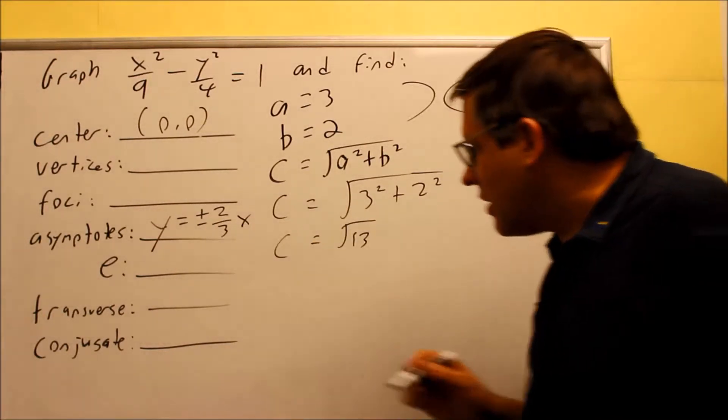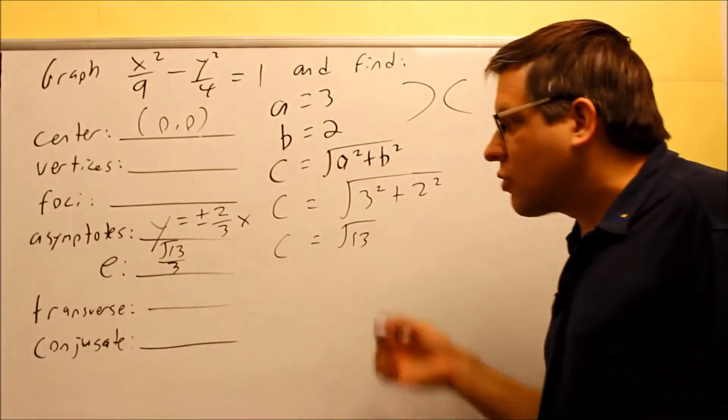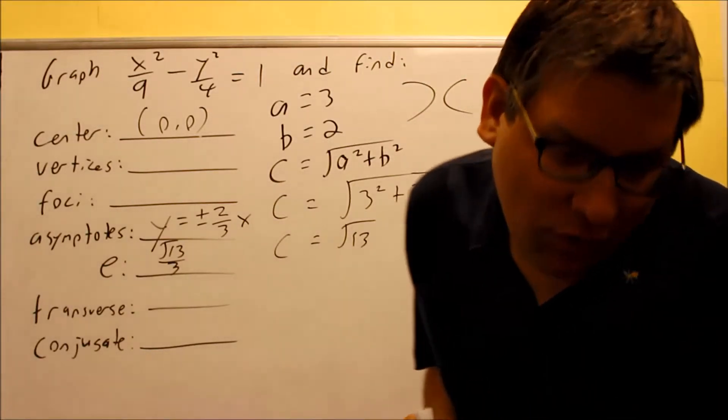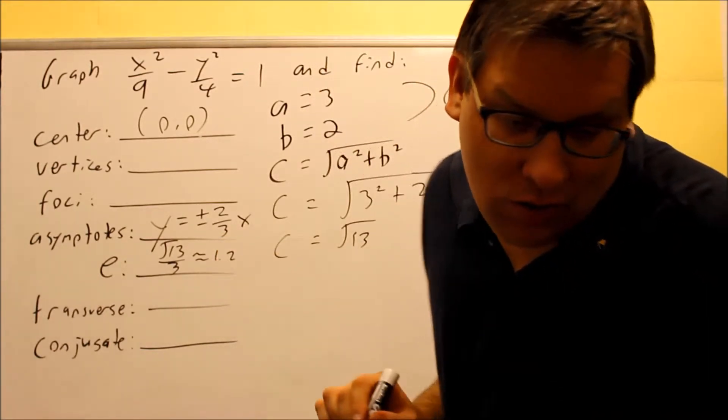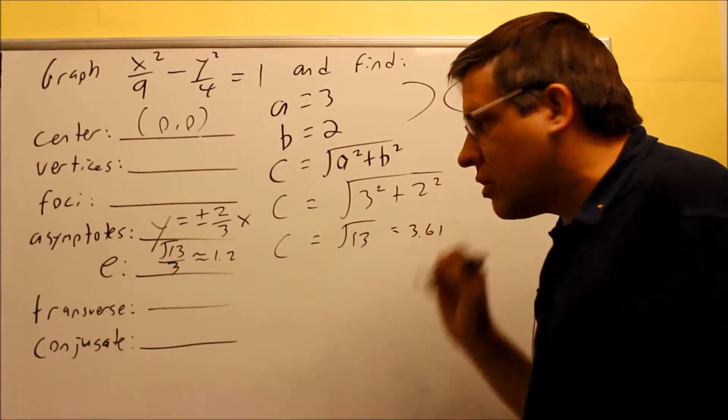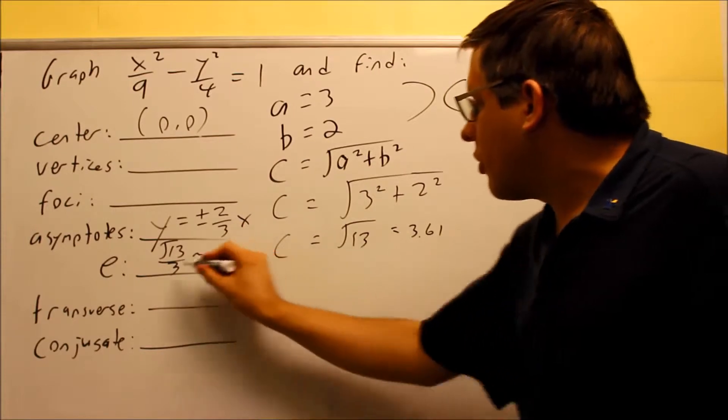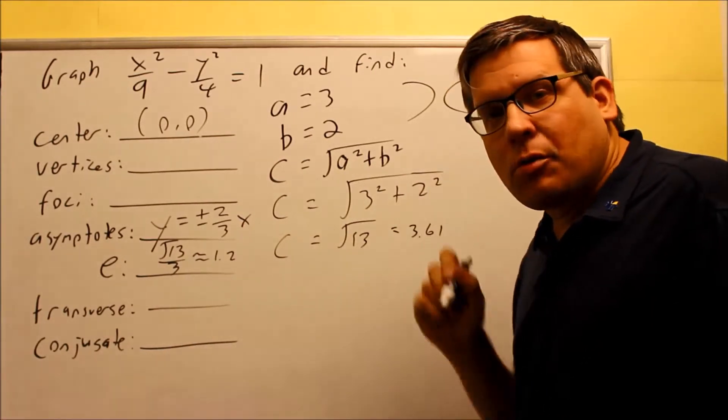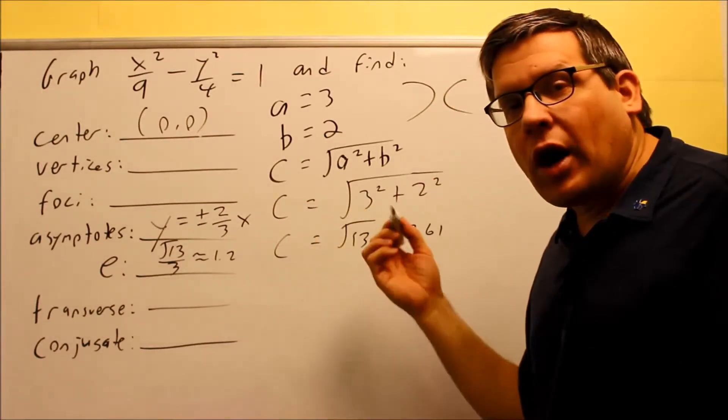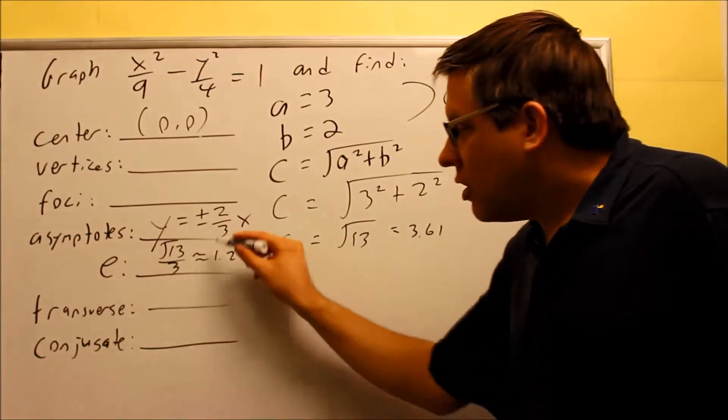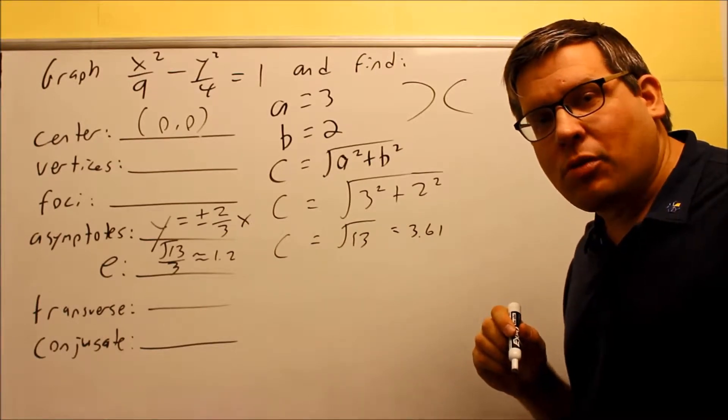Eccentricity is c over a, so that's square root of 13 over a which is going to be three, so square root of 13 over three. For a decimal we'll go ahead and write that it's about 1.2 approximately. We'll take a look at a couple different examples and you'll be able to compare what this looks like, but usually the larger the number the wider it ends up being, so this one's going to be a little bit narrower because the number is smaller.